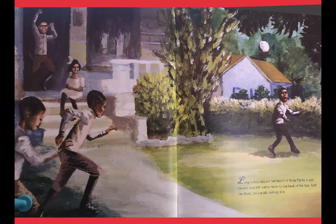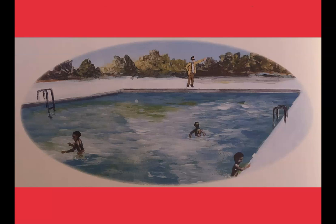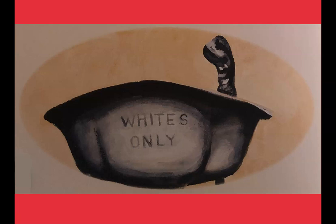Long before anyone had heard of Rosa Parks, a guy named Jack refused to move to the back of the bus. And like Rosa, Jack made history too. Jack Robinson grew up in Pasadena, California, at a time when the public pools were open to black children only once a week, then drained immediately afterward and refilled with fresh water for the white children, who swam the rest of the time.